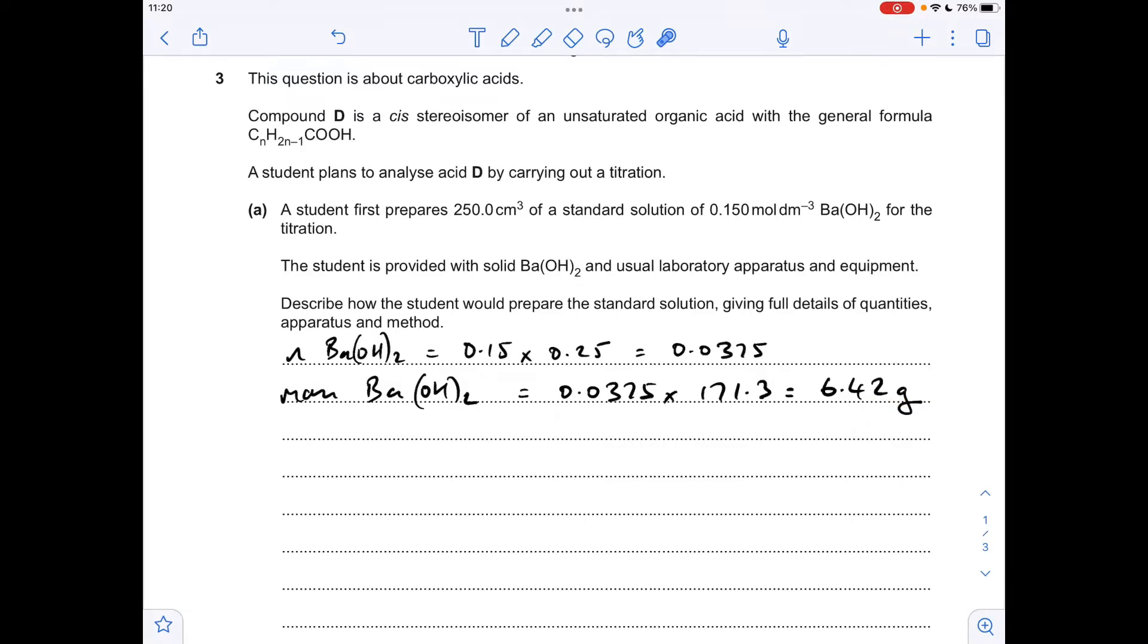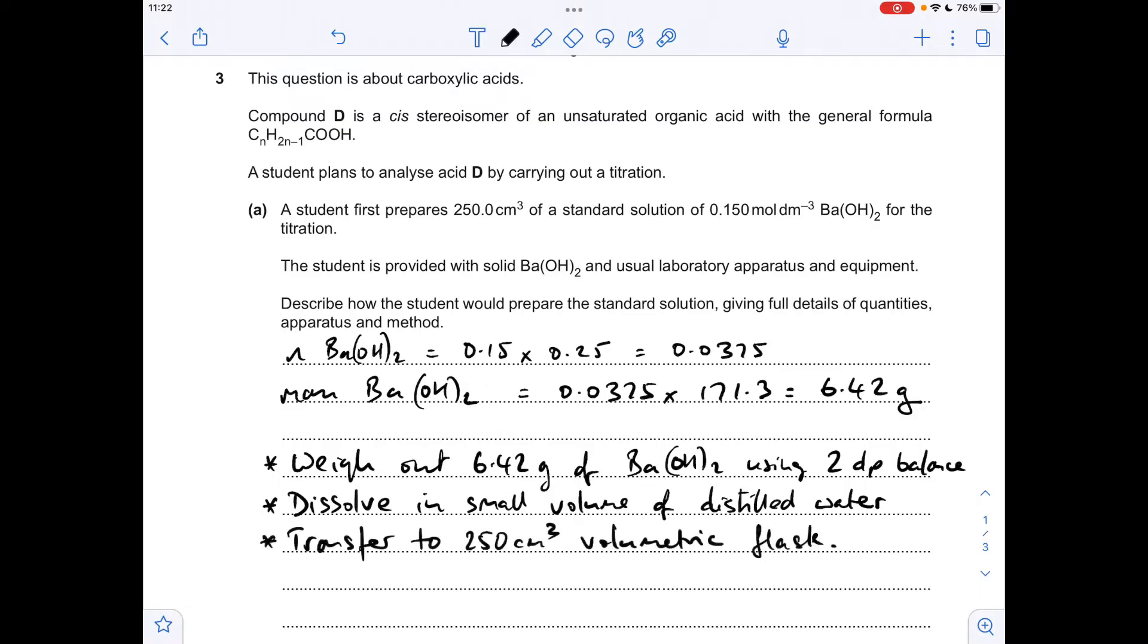We'll move on to the preparation of the standard solution now. Obviously, the first thing we need to do is weigh out that many grams, 6.42 grams, of the barium hydroxide using a 2 decimal place balance. We'd then dissolve that in a small volume of distilled water. That then needs transferring to a 250 cm³ volumetric flask.